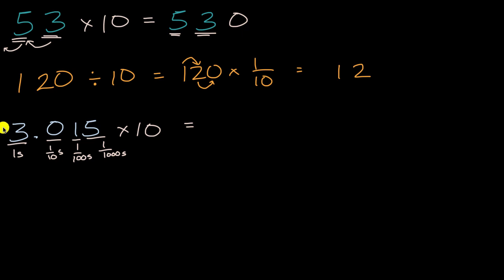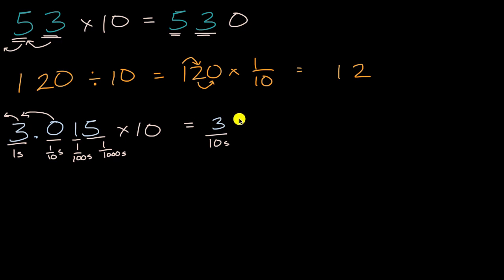But now they're all going to shift one place to the left. So the three is now going to go into the tens place — it's going to shift one place to the left, so we're going to have three in the tens place. And now this zero, which was in the tenths place, is now going to shift into the ones place, so the zero is going to go right over there — that is now in the ones place.